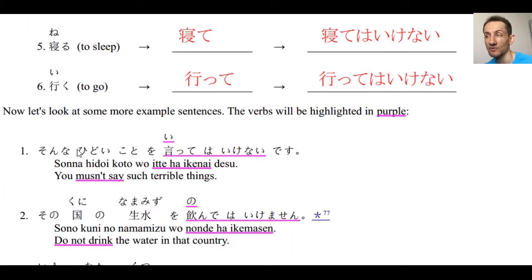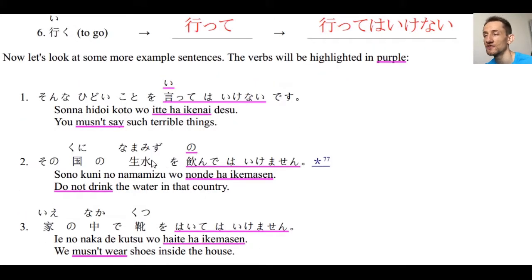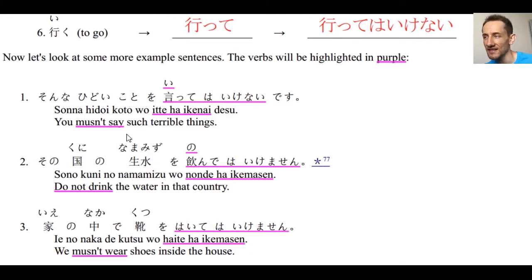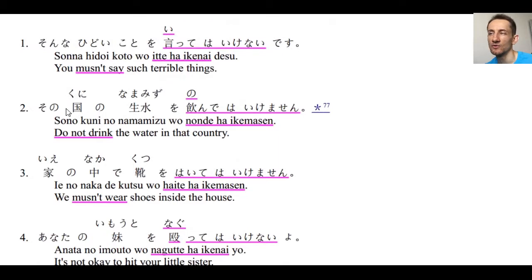Now we'll look at some of these verbs in example sentences to see how they might be used in conversation or real-life situations. Number one: Sonna hidoi koto wo itte wa ikenai desu — you must not say such terrible things. Hidoi koto means bad or terrible things; itte wa ikenai means mustn't say.